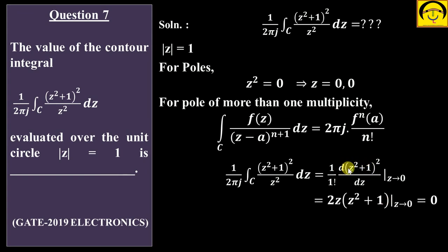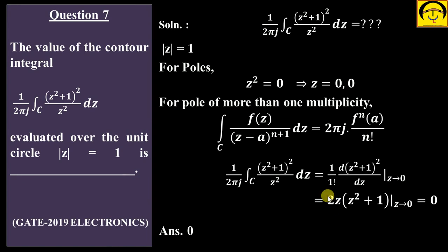So we take one derivative of f(z) = (z² + 1)². Using the chain rule: derivative = 2(z² + 1) · 2z = 4z(z² + 1). Now substitute z = 0: we get 4(0)(0² + 1) = 0. So the answer is 0.